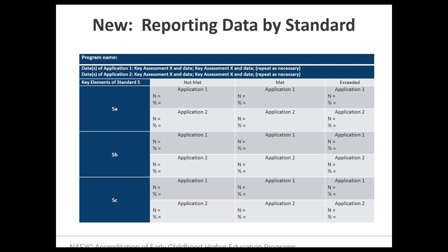When using the new reporting format, in the annual report you'll report one standard at a time instead of one assessment at a time. In your overview chart, you'll look to see which assessments touch on that standard. In most cases, programs find that maybe two or three assessments tend to be a sweet spot for aligning with the full depth and breadth of a standard. Whichever assessments you've said address a key element of that standard is where you'd report those data.